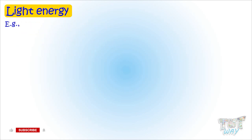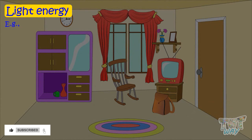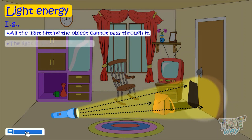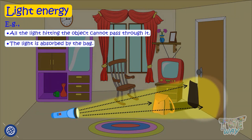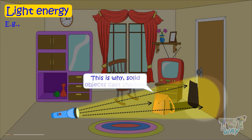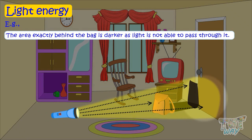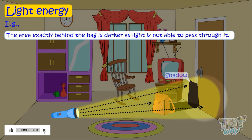Here is an example. If we strike light on a solid object, say a bag, the light hitting the bag will not pass through it. It will be absorbed by the bag as it's a solid object — very little amount of light will pass through it. This is why solid objects cast shadows, as light is not able to pass through them. The area exactly behind the bag is darker as light is not able to pass through the bag, and this is what we call a shadow.